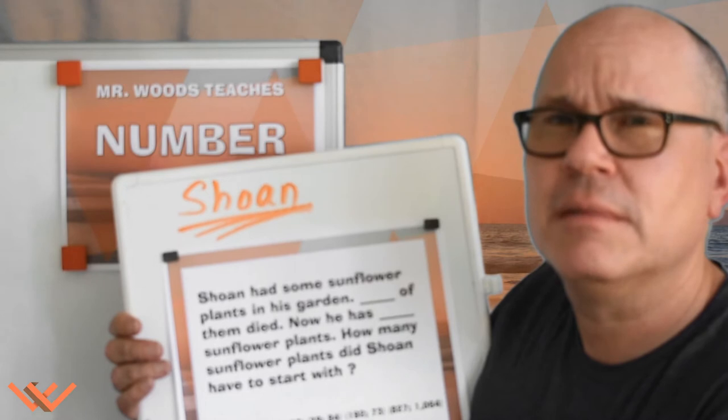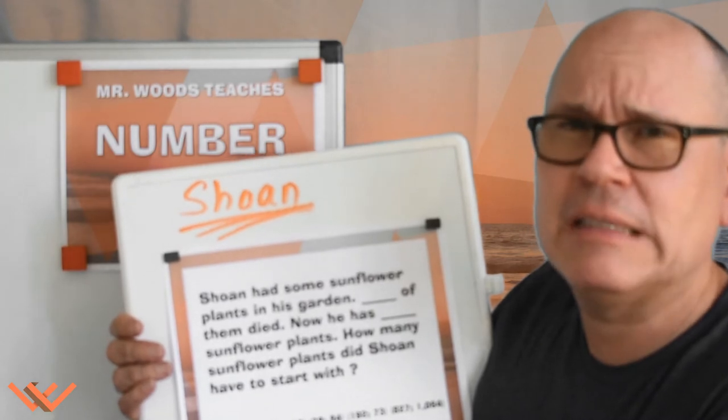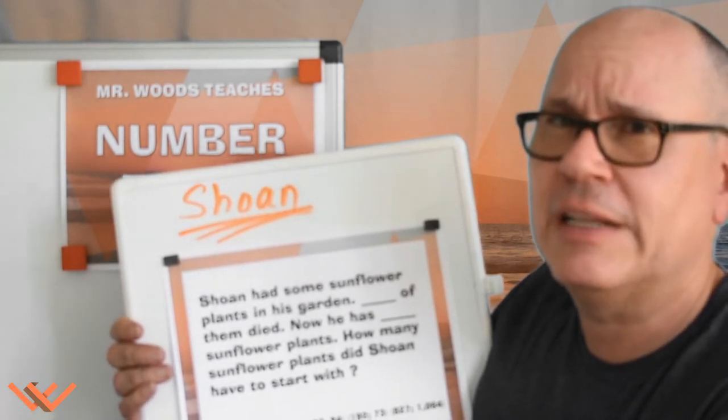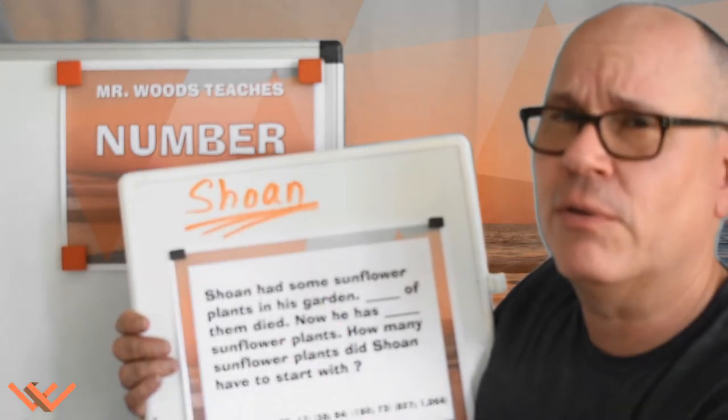What do you think? Too bad the plants died — I don't think he has a green thumb. That's why I put his name in orange.